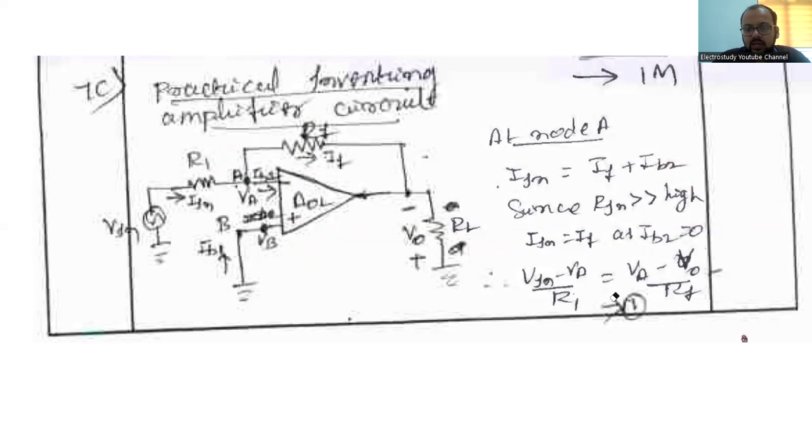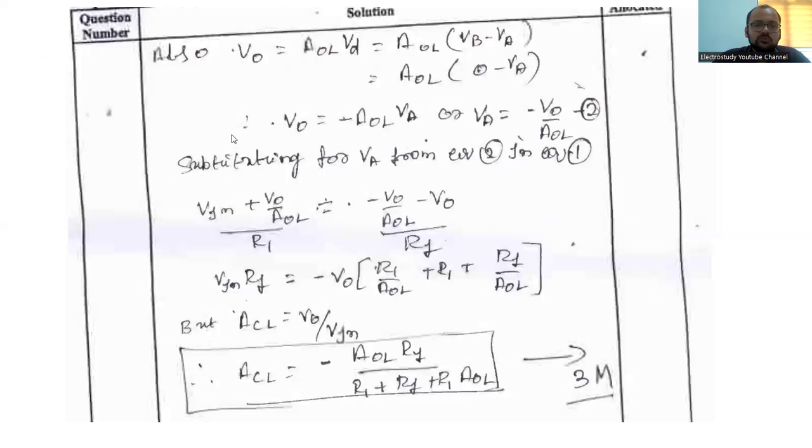You can derive VIN minus VD by R1 equal to VD minus V0 divided by RF. Now you can use the gain formula. V0 is equal to AOL into VD. AOL is the gain. VB will be 0 only, 0 minus VA. That will be VA into AOL. Give the negative symbol also. Or else VA can be written as V0 by AOL. Similarly, substituting VA and VF from equation number 2 and equation number 1. Equation number 1 is in the previous slide. Make a note of equation number 1. Substitute equation number 2 in 1. I request you to work out once. Then it will be easy for you for the examination.